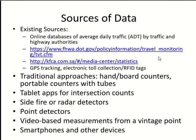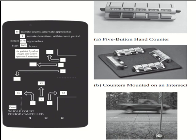What are the sources of data? Some sources are available through the government and made open access in some cases. If you have to collect your own data, you can do it manually using devices, or install detectors on the road to collect data automatically. You can also use video-based measurements, or smart devices such as smartphones — their main purpose is not data collection, but they can be used.